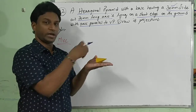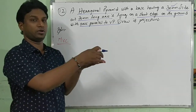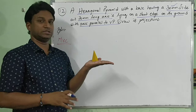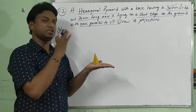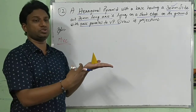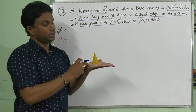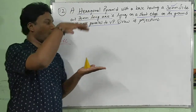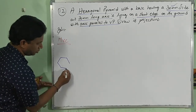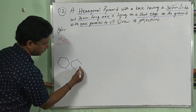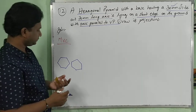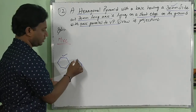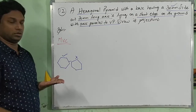As usual, we place the object such that it is on HP with respect to its base. The base shape is hexagonal. You can draw its true shape in the top view. Since it is lying on a slant edge, the hexagon has to be drawn corner-to-corner — with respect to the corner of the base. This is the correct orientation for the top view in stage 1.